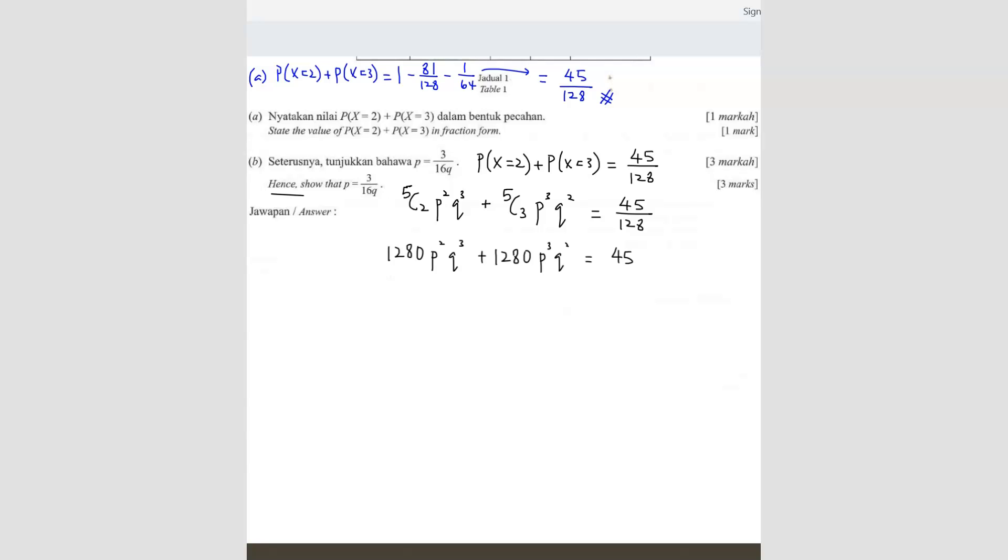So now what we can do is that we can factorize what they have in common. So when I factorize, I get 1280. So here I've got P square, here I've got P cube. So I'm going to take out P square. And then here I've got Q cube and Q square. So I'm going to take out Q square. So what I have left is Q on one side I've got Q plus P equals to 45. Now the reason why I'm doing this is because you see here Q plus P. So we know that the probability of success plus the probability of failure will be equals to 1. So this one you should know. Probability of success plus probability of failure is equals to 1. So in this case, this one actually becomes 1. So now what is left is 1280 P square Q square equals to 45.